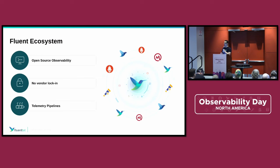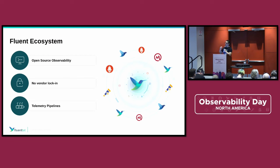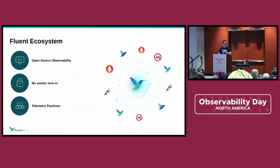What you need to do is integrate. If you are using Syslog and you want to move to OpenTelemetry, you're not going to rewrite your applications from 10 or 20 years ago. You're going to find a channel for conversion. In the Fluent ecosystem, we integrate and interoperate with OpenTelemetry, we do OpenMetrics, and with everything you can imagine from a telemetry perspective.